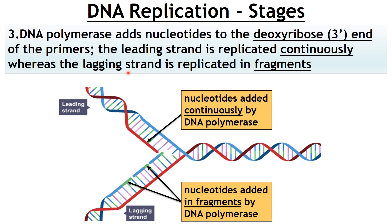The next stage is DNA polymerase — our enzyme — it adds nucleotides to the three prime end of the primers. The three prime end of the DNA strand is where the primers are bound to. So if the red dot marks the three prime end of the DNA strand, then that is the five prime end of the primer; the three prime end of the primer is further along. Nucleotides are added on to the three prime end of the primer. On the leading strand, nucleotides are added continuously, because the replication fork is continuing to open up.